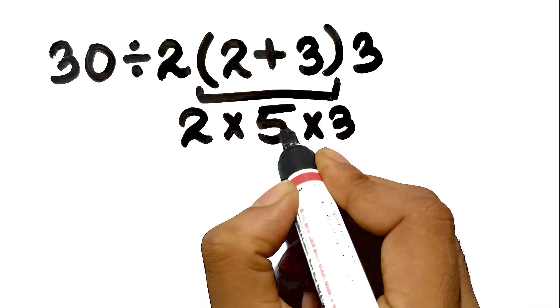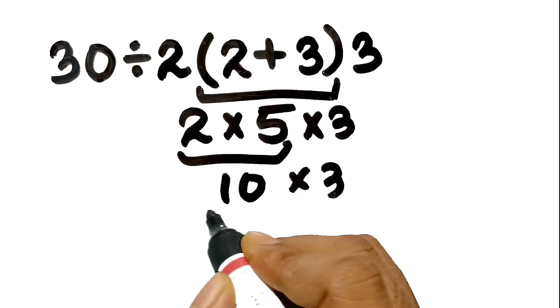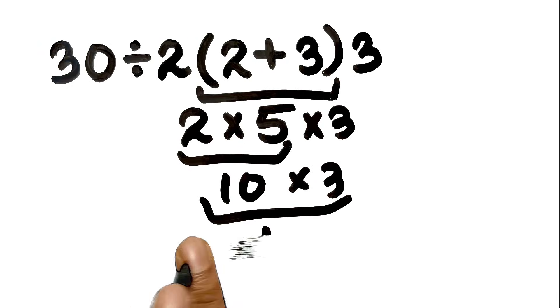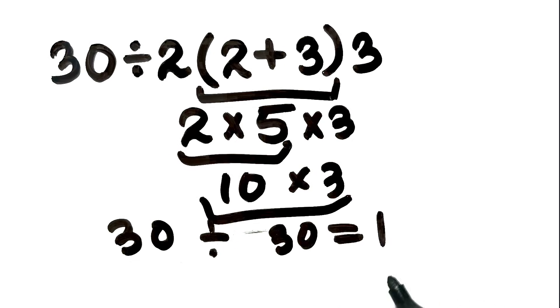They think two multiplied by five gives 10, and then 10 multiplied by the final three gives us 30. And again, here we have 30 at the start, so they take 30 divided by 30, which equals one.